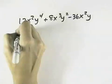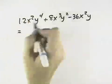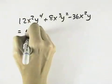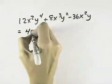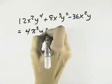We want to factor this completely, which means first take out the greatest common factor. The coefficients have a factor of 4 in common. The x is the highest power in common as x squared. The highest power of y in common is a y.